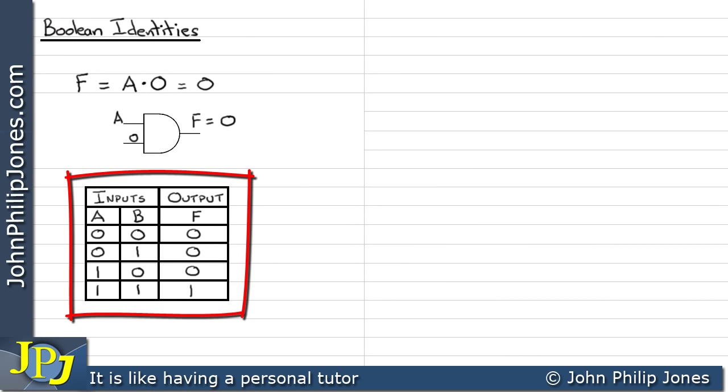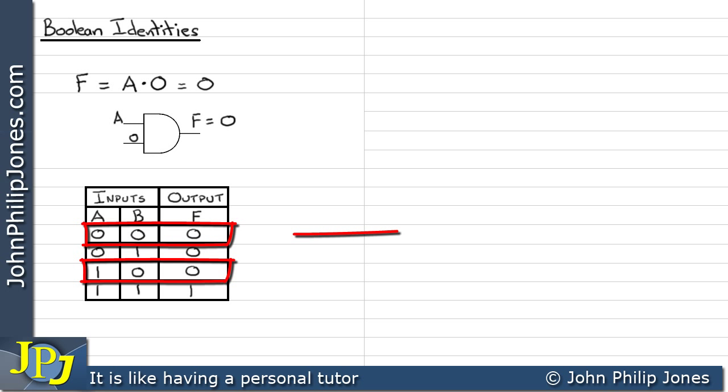This is the truth table for a two input AND gate. We'll use this to prove that A and 0 in fact minimizes to a 0. We're really concerned with these two combinations here. This one where both A and B are a 0 and this one where A is a 1 and B is a 0.